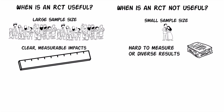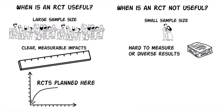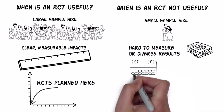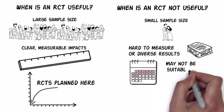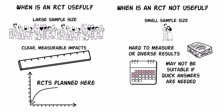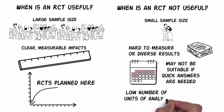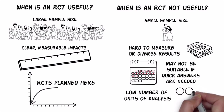An RCT needs to be carefully planned from before the beginning of an intervention — RCTs cannot be undertaken retrospectively. Because data need to be gathered from the beginning of the programme until impacts can be observed, RCTs are usually not suitable when quick answers are needed. Another situation when RCTs are not suitable is when the number of units of analysis is too low, for example, capacity building in a single organisation or advocacy campaigns at the national policy level. The low number of units won't allow random assignment and tests of statistical difference.